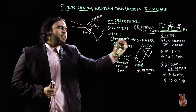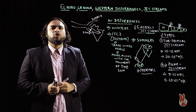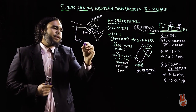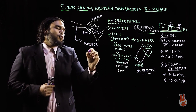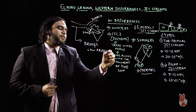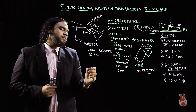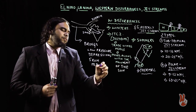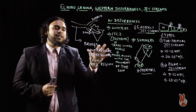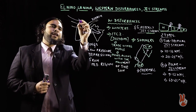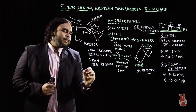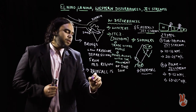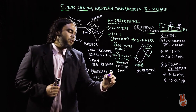The subtropical jet stream, initially around 25 degrees latitude, moves southward and collides with the Indian subcontinent, getting divided into two streams — one to the north of India and one to the south. The southern branch brings low pressure depressions from the Mediterranean region into India during winters. These cyclonic activities bring precipitation that is helpful for Rabi crops.